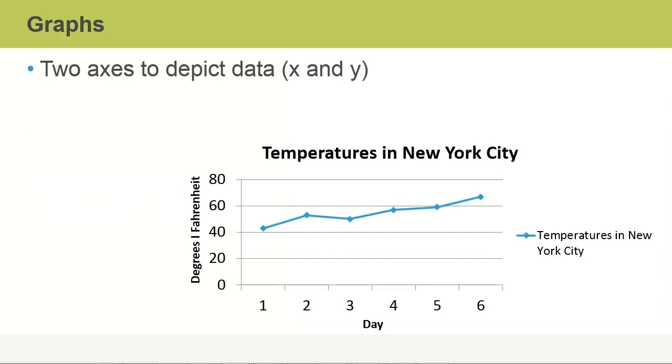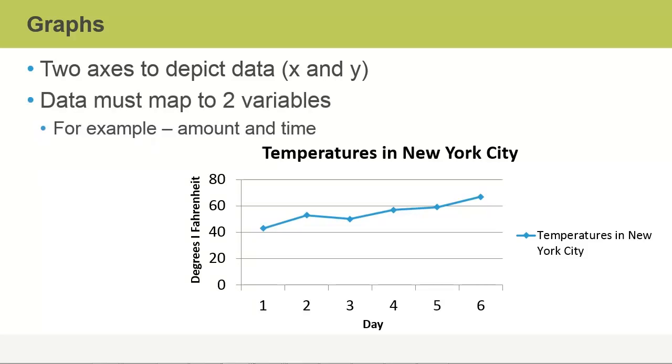Simple, effective graphs use two axes to depict the data using x and y coordinates. Typically, at least one coordinate is a quantitative value. The data must map to two variables relating to your x and y coordinates. In this example, amount and time. The amount is on the y-axis and it is in degrees Fahrenheit, and the time across the x-axis is a particular day.